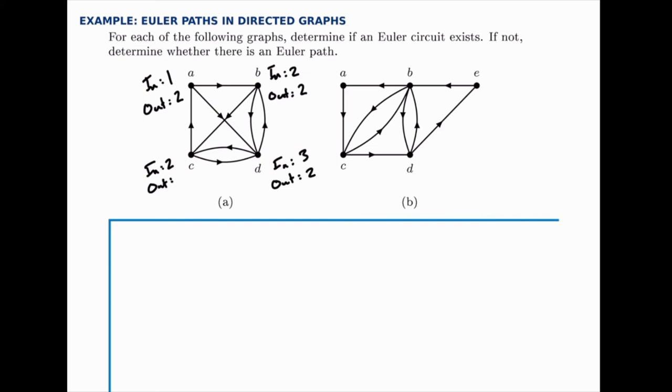So B and C are both consistent, each of them has the same number of ins and outs. Node A has one more going out than coming in, and node D has the opposite, one more coming in than going out. So that's the situation where there's an Euler path, even though there isn't an Euler circuit.